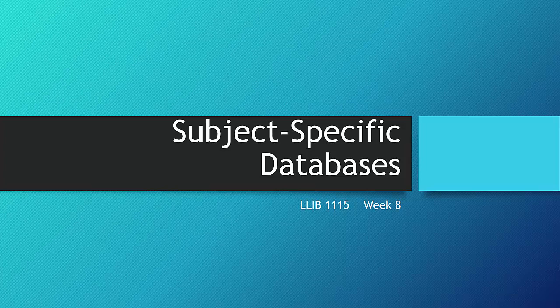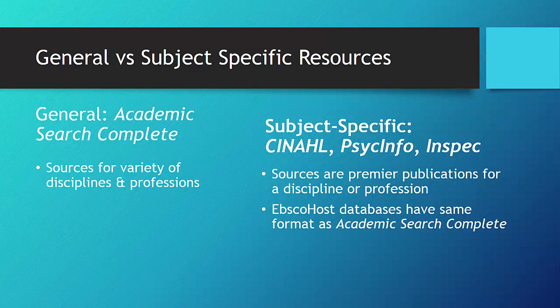The next step is to use subject-specific databases. Academic Search Complete is a general database, but ISU has over 150 subject-specific databases. Since this class is to prepare you for research in your discipline, it is important that you use and explore the databases used in your field of study.